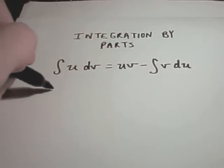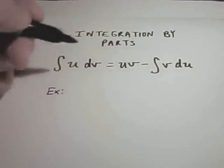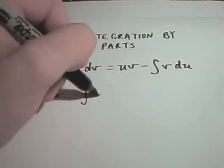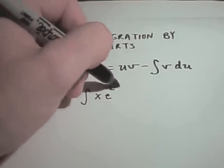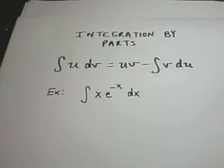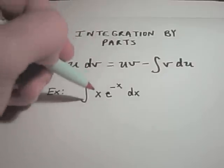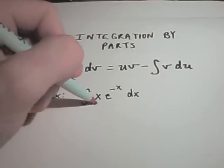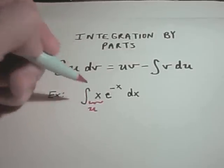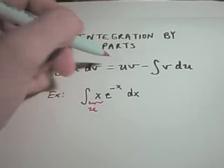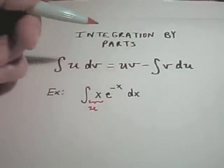As an example here, suppose we're integrating x times e to the negative x. As a rule of thumb, this definitely doesn't always work, but I pick u to be the thing that when I take the derivative of it, it becomes easier, more simple. If I pick u to equal x, I'll simply get one when I take the du, the derivative of it.